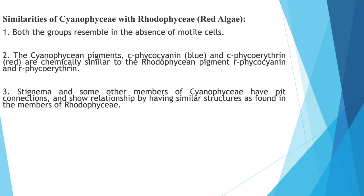Similarities of Cyanophyceae with Rhodophyceae (red algae): Both groups resemble each other in the absence of motile cells. The Cyanophycean pigments C-phycocyanin (blue) and C-phycoerythrin (red) are chemically similar to the Rhodophycean pigments R-phycocyanin and R-phycoerythrin. Additionally, Stigonema and some other members of Cyanophyceae have pit connections, showing structural similarity with members of Rhodophyceae. That is why Cyanophyceae is kept under a separate group — distinct from both bacteria and red algae.